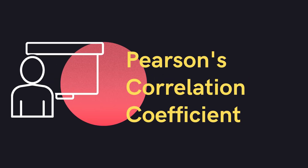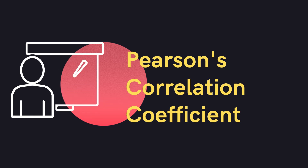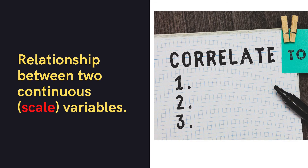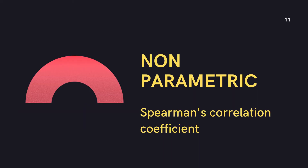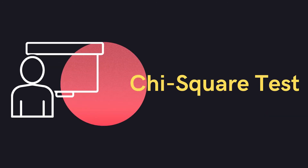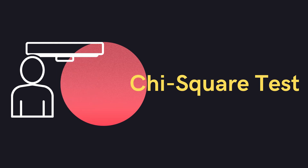If we are looking for associations between two scale variables — for example, marks obtained by students and the time spent on online classes — we go for Pearson's correlation coefficient. If the variables are ordinal, we go for Spearman's correlation coefficient.